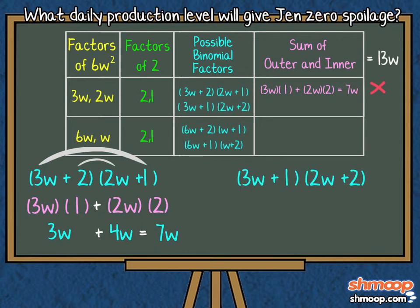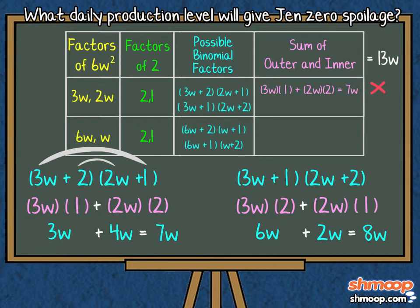The next possible binomial factor is 3W plus 1 times 2W plus 2. Here we repeat the steps to solve for B. Nope, that one didn't work either. On to the next factors.